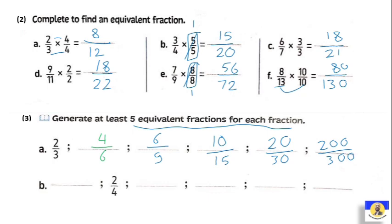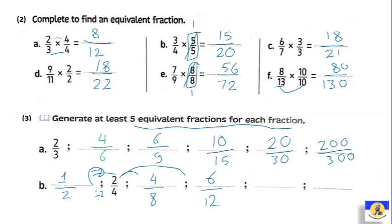For two over four: we can divide by two — two divided by two equals one, and four divided by two equals two, giving one over two. Or multiply by two: two by two equals four, and four by two equals eight, giving four over eight. By three: two by three equals six, and four by three equals twelve. By five: one by five equals five, and two by five equals ten, giving five over ten. And by ten gives ten over twenty. We can multiply or divide by any number to get equivalent fractions.